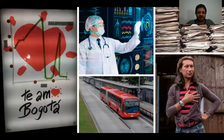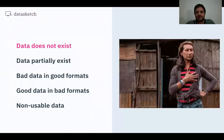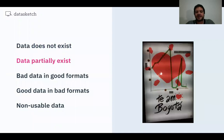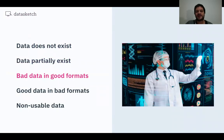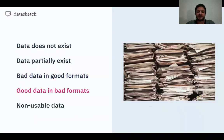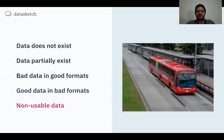How do we handle all this small data? It's challenging because there are many roadblocks. First, data does not exist — for example, data about minorities is usually underrepresented in databases or public information. There's also the case where data partially exists, where data is not properly counted or methodologies for data collection change. There's also bad data in good formats — health records are a good example, where databases are well collected but the information has a lot of noise. Then there's good data in bad formats, like data about judicial processes, which is very commonly on paper. And there's also data that may be in a good format but you cannot use it for legal reasons.